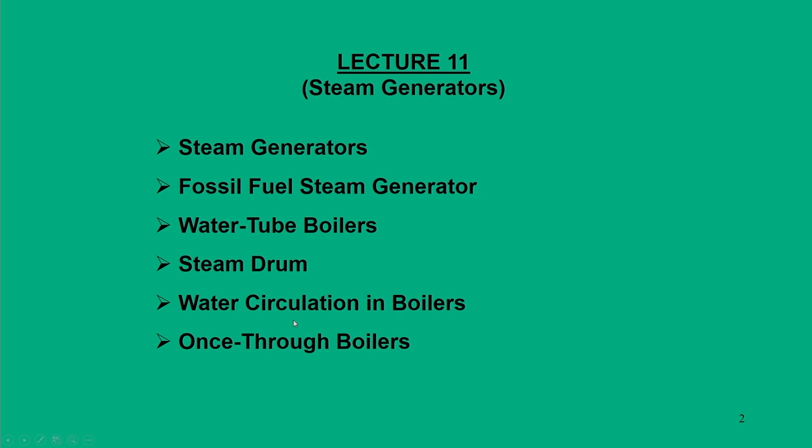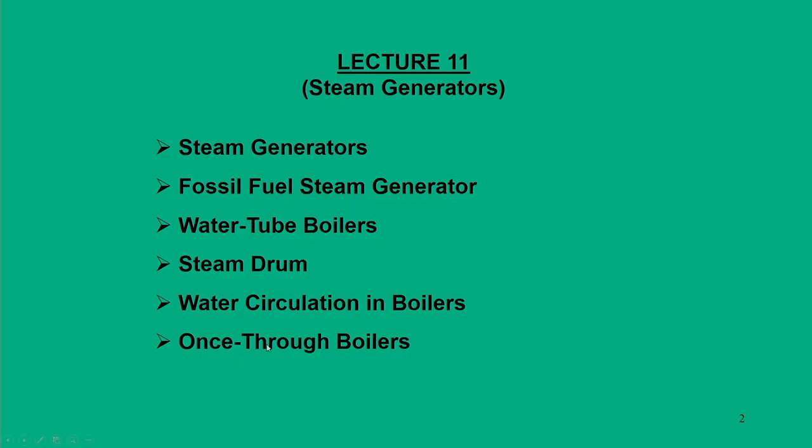Another category is the once-through boiler, which means that when you supply heat to the water, the traditional path goes from liquid to gas phase through latent heat addition and subsequently to the superheated state. In a once-through boiler, if you want to bypass the saturation region, liquid phase can be converted to gas phase directly. In other words, we can take water to steam directly, and such a boiler is known as a once-through boiler.